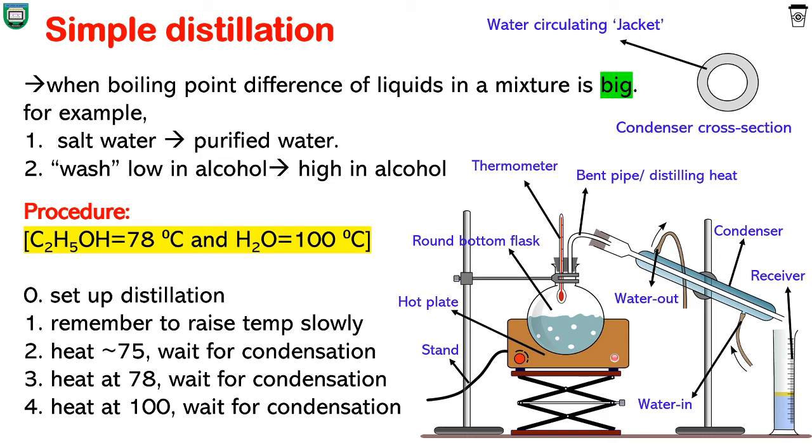Later replace the flask and label it as ethanol. Now we have extracted all or most of the ethanol. Only water is left in the RB flask. Now heat to 100°C to collect water into another receiver and label it as water. Anything that has left behind in the RB flask is just impurity.